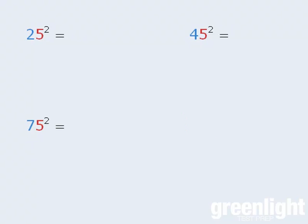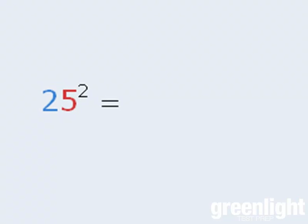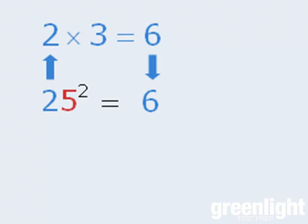To show how this works, we'll begin with 25 squared. The technique is as follows: First, take the number in front of the 5—in this case, the number is 2—then multiply 2 by the number that is 1 greater than 2. In other words, multiply 2 by 3. When we do this, we get 6, which we'll write down here.